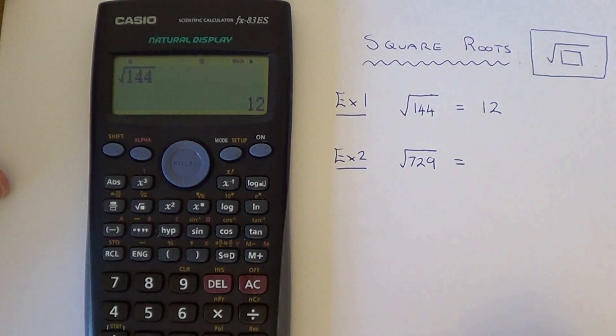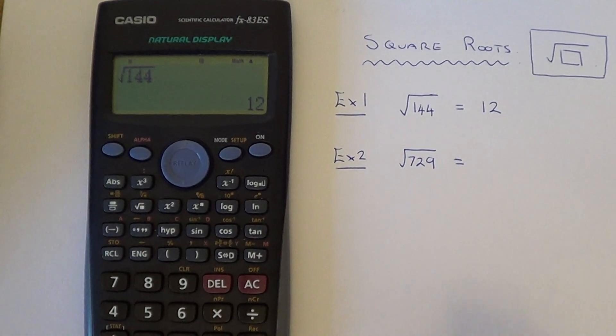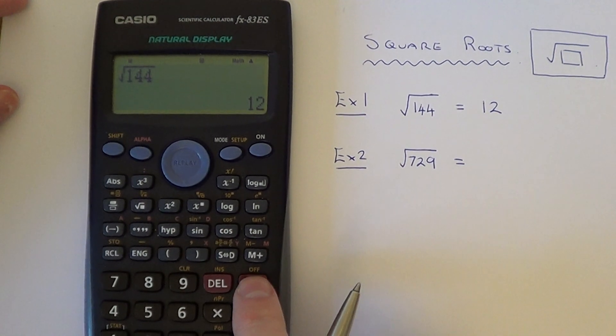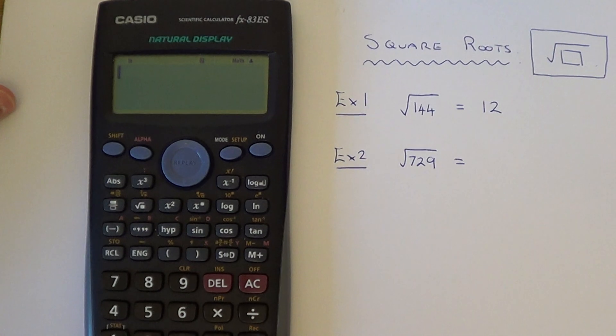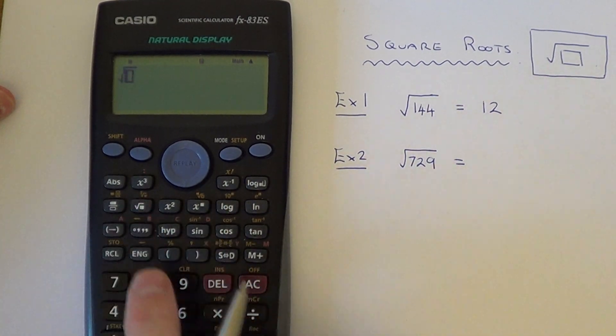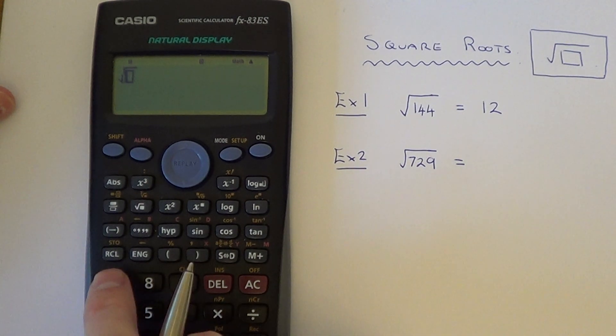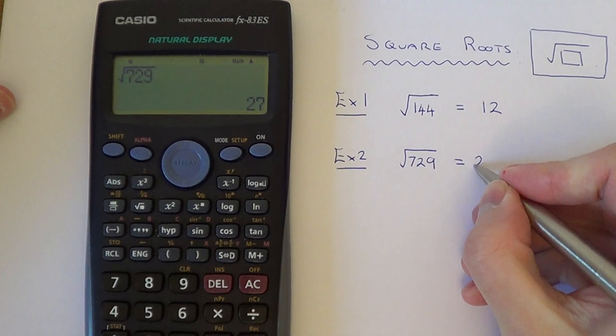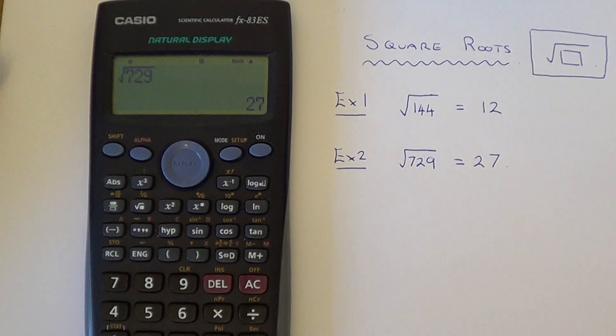Let's have a look at example two then. So this one's a little bit harder, so we definitely need our calculator. So this time we've got the square root of 729, so if we just clear the last one. So again, hit our square root key, which is this one, and type in 729, and that will give us an answer of 27.